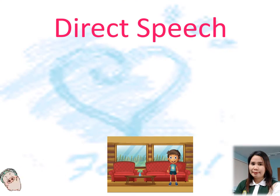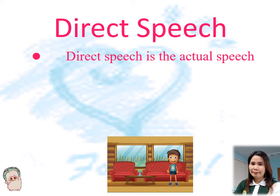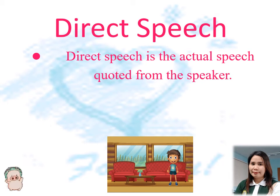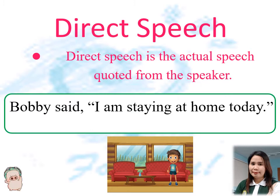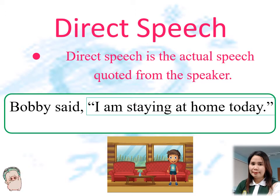Now, let's have direct speech. What is direct speech? Direct speech is the actual speech quoted from the speaker. For example, from sentence number one: Bobby said, "I am staying at home today." This is an example of direct speech, which means these are the exact words of the speaker — it is currently happening. The quotation marks show that the statement inside are the exact words of Bobby.